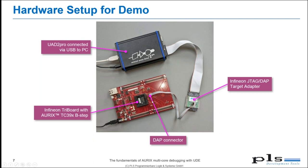The DAP port is the Infineon-specific debug interface used to connect the debugger to the microcontroller. You can use JTAG, but JTAG has some disadvantages in terms of reliability and speed. The adapter is the only device-specific part in the debugger setup. That means I can use the UAD2 Pro to debug other devices like ARM Cortex-based or PowerPC-based devices — you only need another adapter for the target-specific debug interface and an appropriate license.